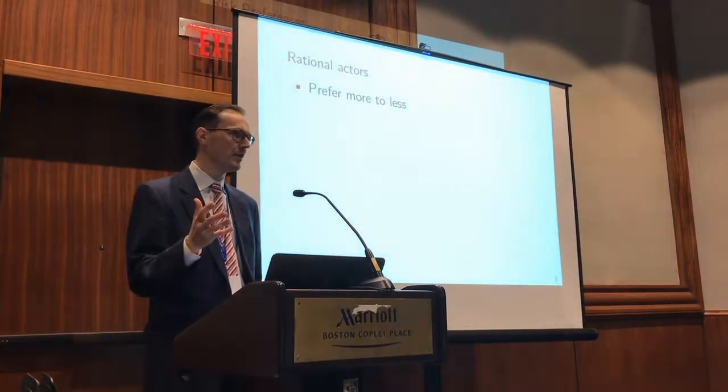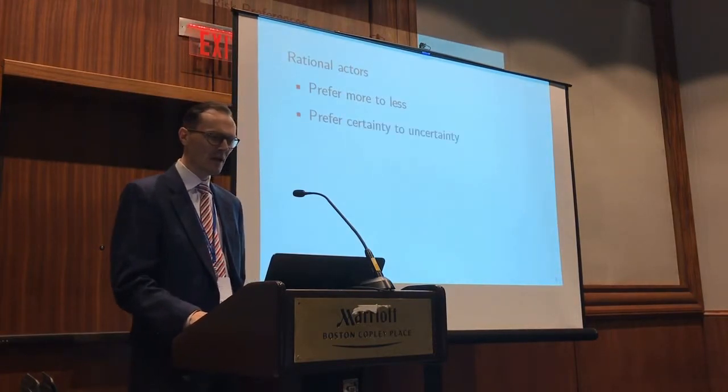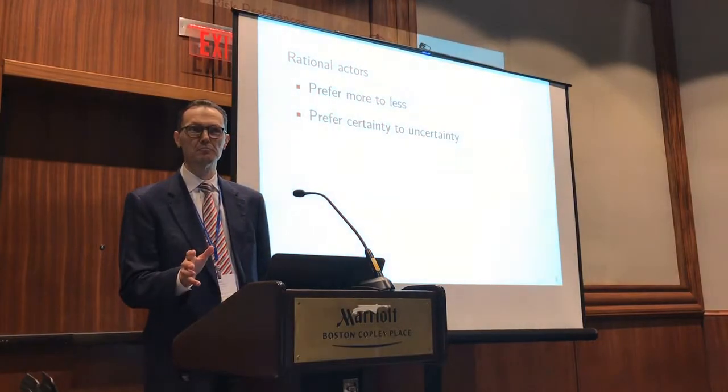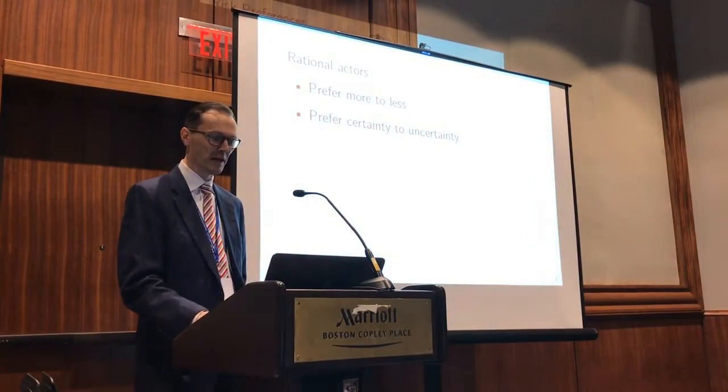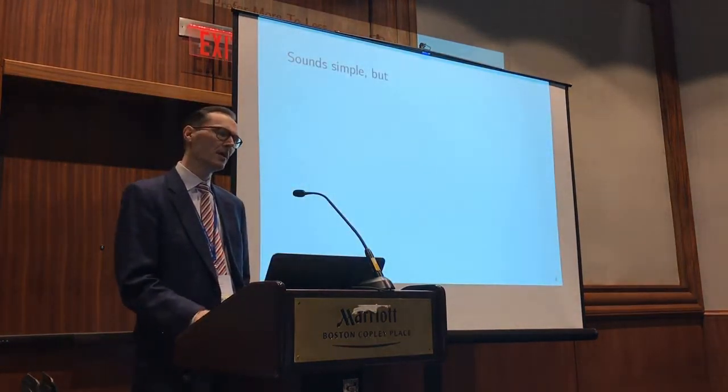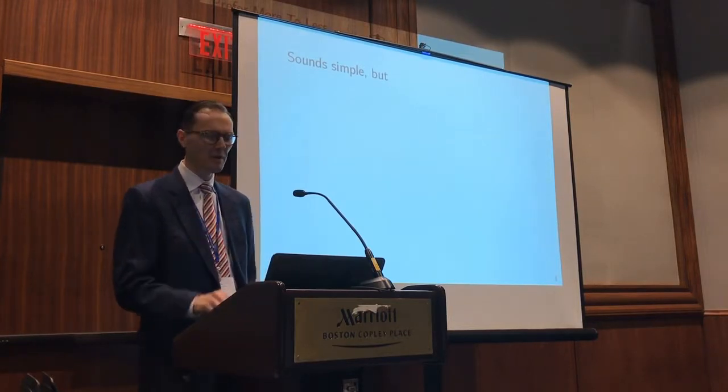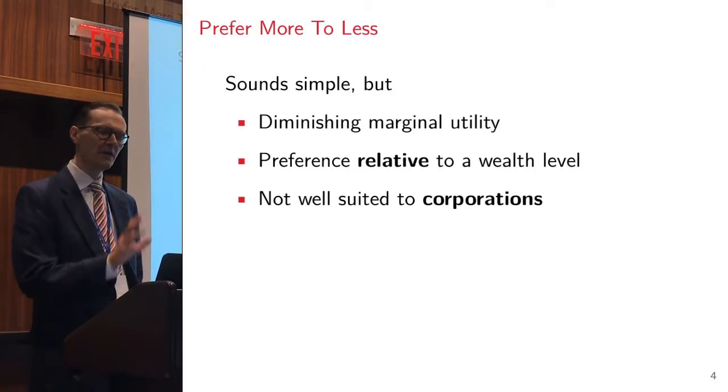We typically think of rational actors and rational people as they prefer more to less of a good thing. It's not possible to have too much of a good thing. We prefer certain things to uncertain things. Probably everyone, given a choice, would prefer a certain bet or a certain amount to a bet of the same expected value.